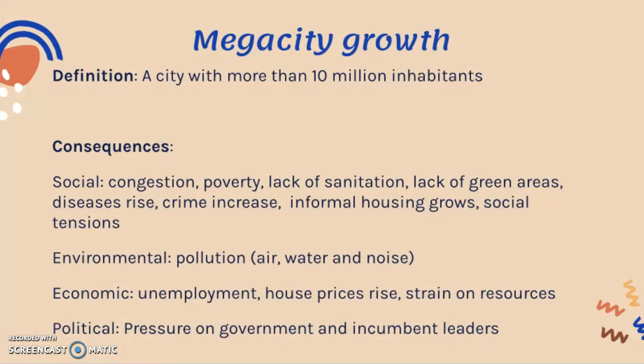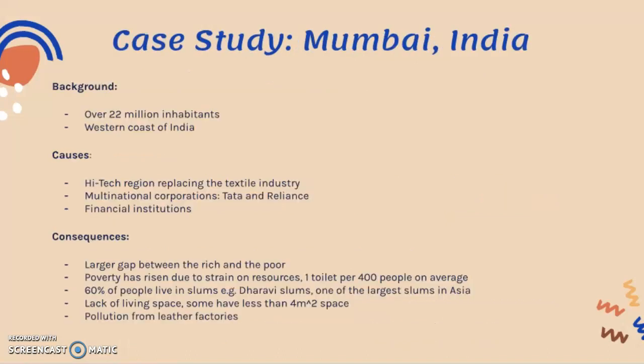The case study for mega city is Mumbai in India. The background: it has over 22 million inhabitants, well over the 10 million mark, making it a big mega city. It's on the western coast of India. Causes of its very large growth include being a high-tech region in India — it replaced the old textile industry and houses many multinationals such as Tata and Reliance.